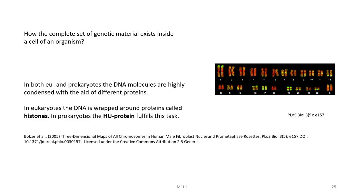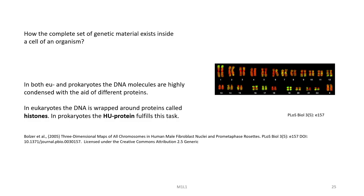These are two important papers regarding nuclear division as observed in live bacteria using new techniques — one by Mason and Pavelson, and another by John Cairns, which spoke about the bacterial chromosome and its manner of replication as seen by autoradiography. Both groups used phase contrast microscopy and autoradiography to show that the essential genes of Escherichia coli are encoded on a single circular chromosome packaged within the cell nucleoid.